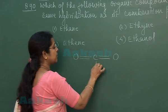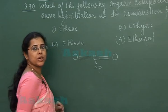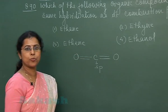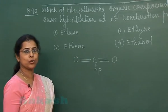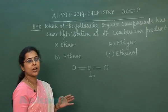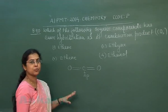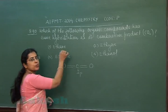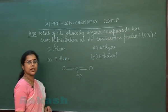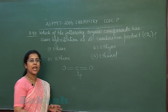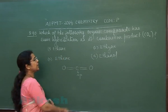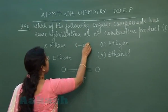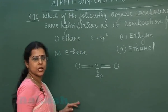Carbon dioxide is a linear molecule in which the carbon atom is present in an SP hybridized state. Among the given four options, we have to select the one where carbon is also present in the SP hybridized state. Ethane is an alkane, meaning carbon is present in the SP³ hybrid state.